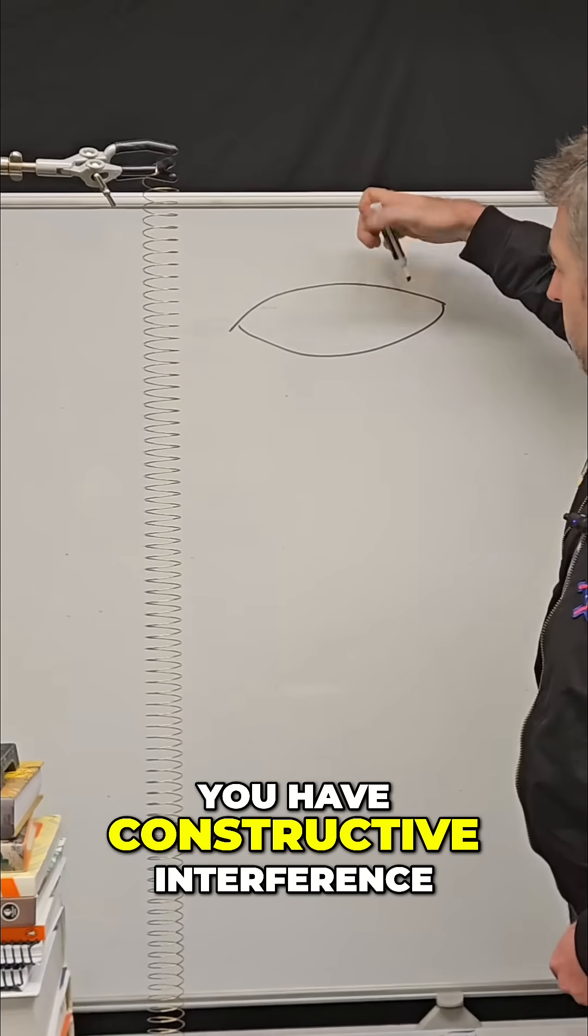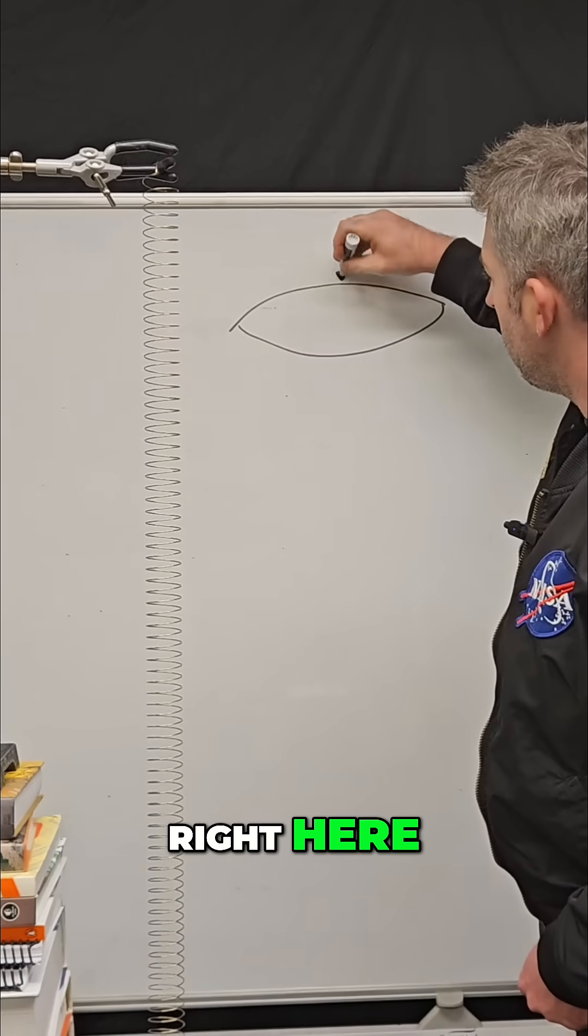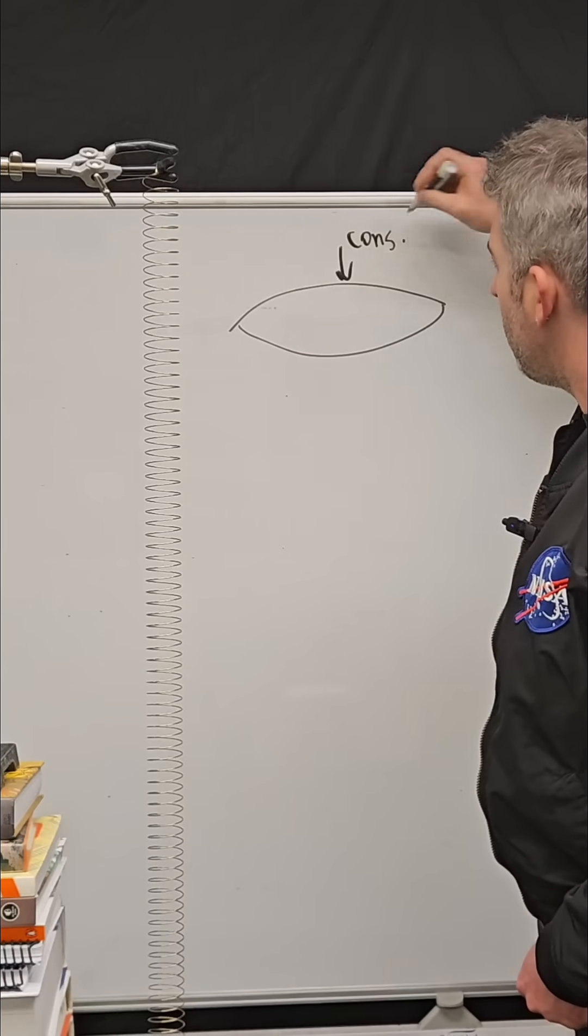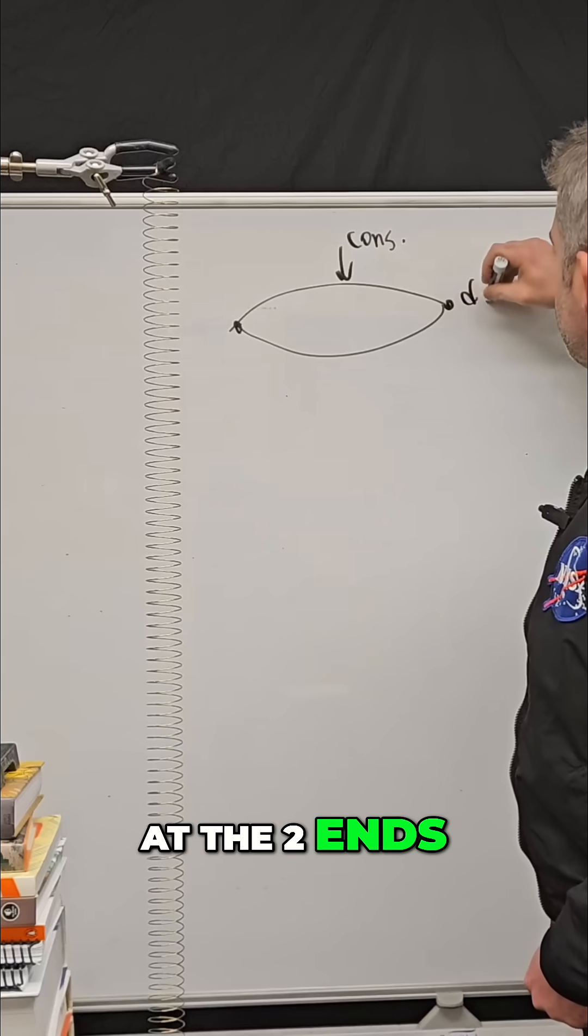So this is where you have constructive interference right here and this is where you have destructive interference at the two ends.